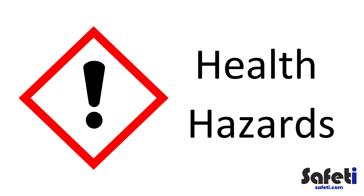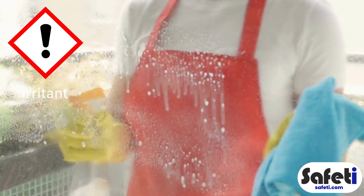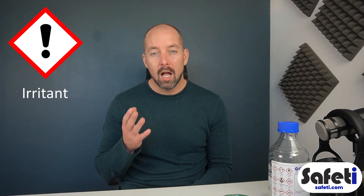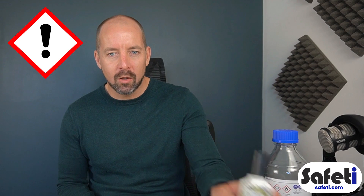Now that we've covered the main physical hazards and the environmental hazard symbol, it's time to look at the key hazard classes listed under health hazards. First off, we have the irritant symbol — the exclamation mark — which you would see on a range of products in your local supermarket and of course in industrial environments as well. It is worth noting that a lot of products with this symbol fall onto the lower end of the health hazard scale.